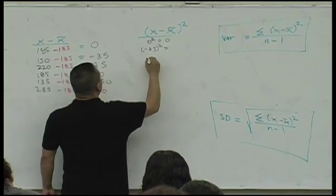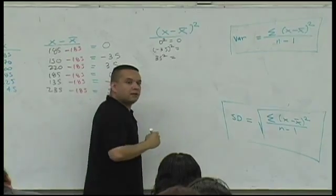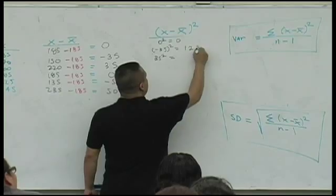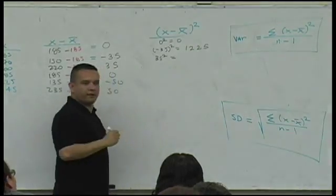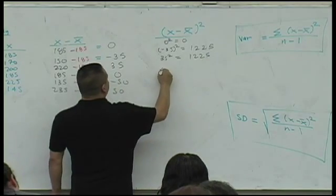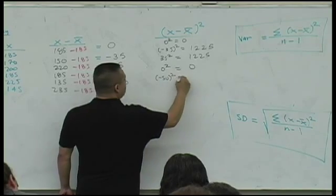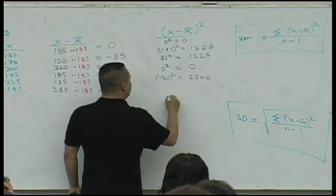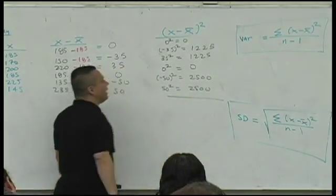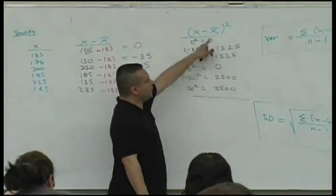What's negative 35 squared? What is it? What is it? 1225. 1225. 1225. What's negative 50 squared? 2500. 50 squared another? 2500. What do you do with this data? What do you do? Add them. You add them.